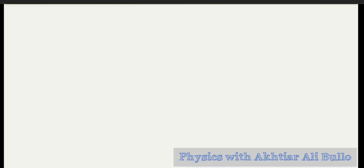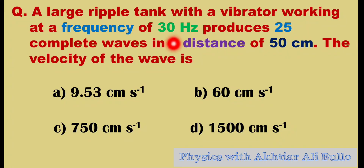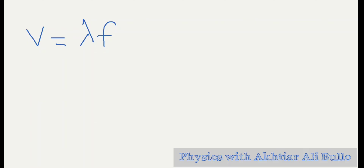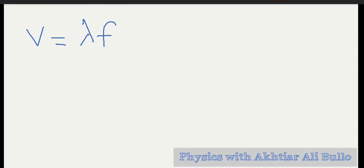To calculate the wave velocity, we will use the formula v = λf. The frequency is given as 30 Hertz, but lambda is not directly obtained, so first we will calculate the wavelength. To calculate wavelength, we will use the formula: wavelength = distance divided by number of waves.